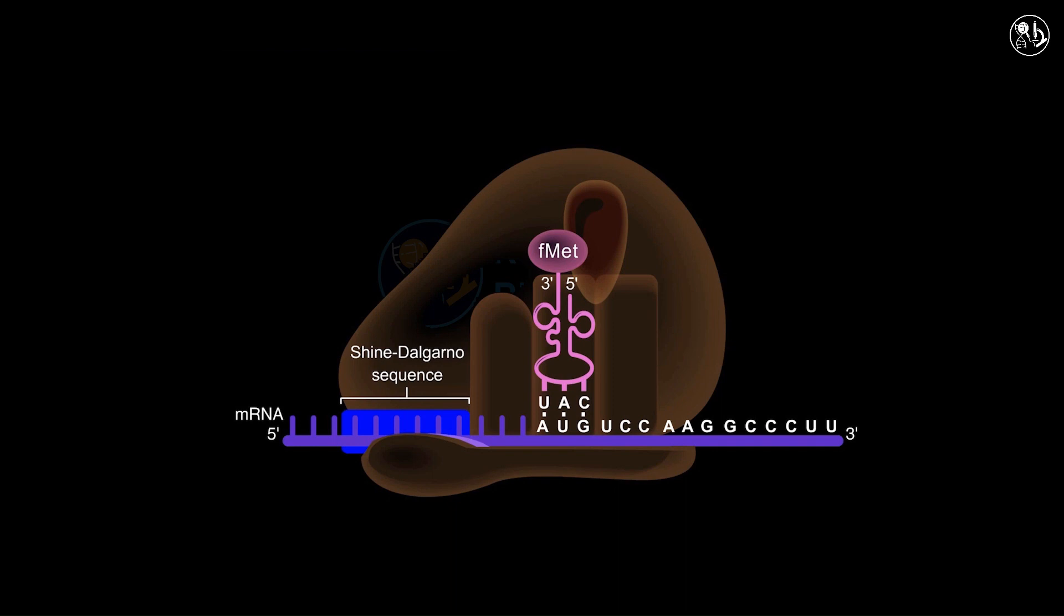The elongation phase proceeds one codon at a time until it encounters a stop codon. At the conclusion of initiation, fMet tRNA was bound by hydrogen bonds to the AUG codon located in the P site of the ribosome.